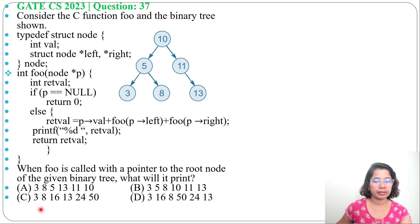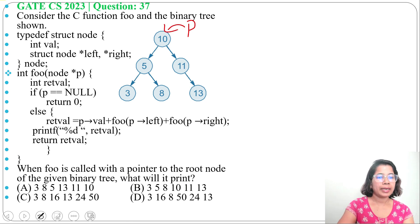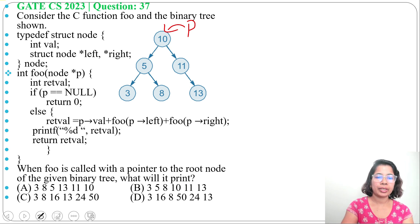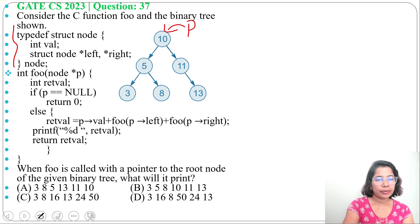Four options are given. Initially p is pointing to 10. The struct node type has an int value, a left pointer, and a right pointer — it's all about the tree structure. Each node has one value, one left child, and one right child.